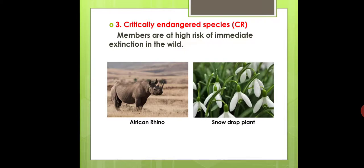What is a critically endangered species? Examples include the African Rhino and the Snowdrop plant.